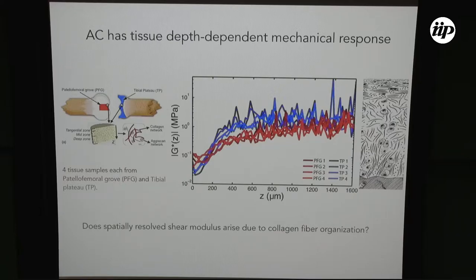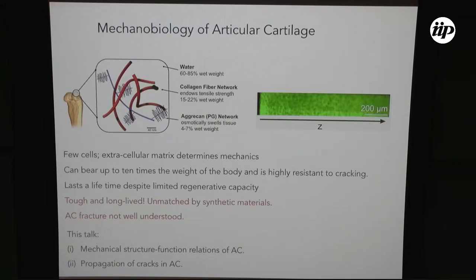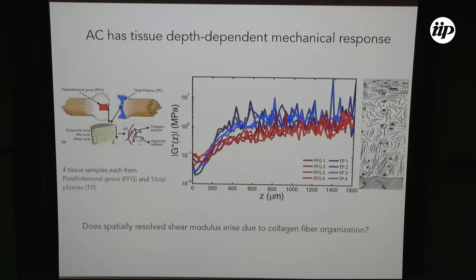To look at the mechanical properties, my experimental collaborators Itai Cohen and Jesse Silverberg started by looking at the depth-dependent shear stiffness of cartilage tissue. It's a three-dimensional tissue and its mechanics changes with the tissue depth. Here, this is basically the surface of the tissue, and the other end is close to the bones. Closer to the surface, the shear stiffness is pretty small. As you go deeper and deeper, the shear stiffness increases and then plateaus. These different colored data are from different parts of the cartilage tissue — the red ones are from the patellofemoral groove, the blue ones are from the tibial plateau.